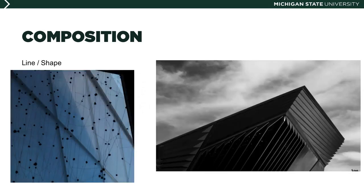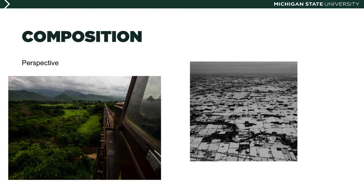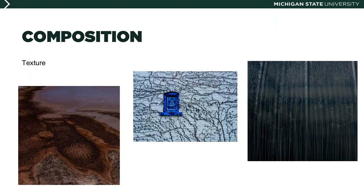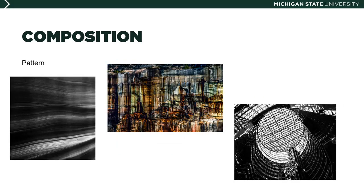Another important aspect of composition is line and shape. Similar considerations hold for vertical or horizontal lines that pass through the image from corners, sides, top, or bottom. There is also the familiar and important term perspective. Negative space is a crucial category visible in each of these images. Further aspects of composition include texture, point of view, and pattern.